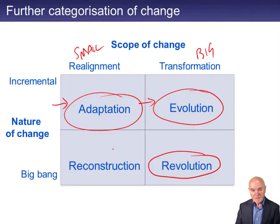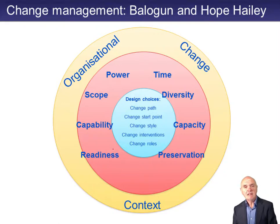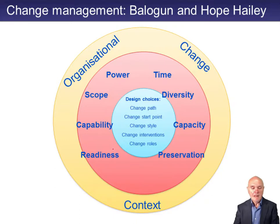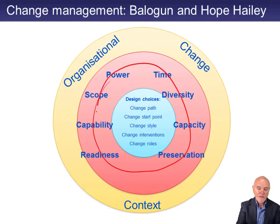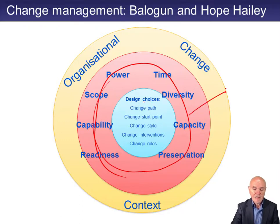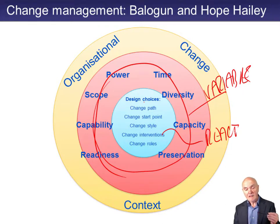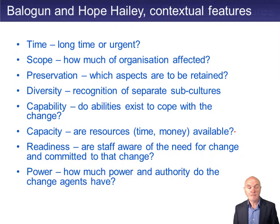Change management — here we're dealing with how to change, not just what to change. One model is the Balogun and Hope Hailey kaleidoscope of change. Around the outer circle are the contextual features of change — the variables — and in the middle are the design choices, how we actually put through the changes. The contextual features can be listed linearly.